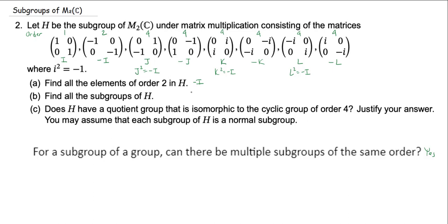So negative I really is the only element of order 2. Now let's find all the subgroups. Lagrange's theorem tells us all subgroups have order 1, 2, 4, or 8. The order-1 subgroup is just the identity element, and the order-8 subgroup is the entire group H. So we're down to finding subgroups of order 2 and subgroups of order 4.